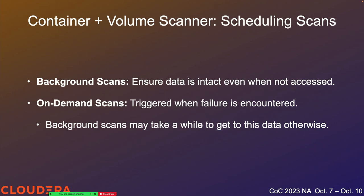We've talked about these scanners in a background context — threads running continuously, checking data to make sure it's still there and consistent even if it's not being accessed. We also have on-demand scans in the data nodes. These are triggered when a failure is encountered while operating with a container. While the background scans cover all data, they may be slower. On-demand scans are triggered for data that is actively being accessed — when we have a failure accessing that data, we triage off to the background scanners asynchronously, saying 'I saw some error, I'm not sure what it was — can you figure it out?'